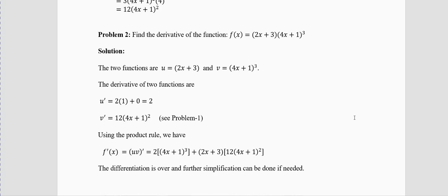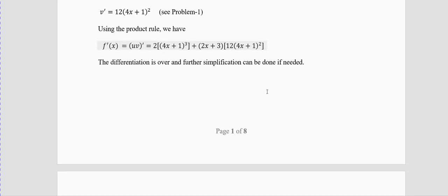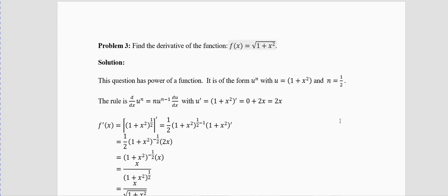Problem 2: Find the derivative of f(x) = (2x+3)(4x+1)³. Here you are multiplying two functions. The rule is: derivative of first function × second function + first function × derivative of second function. The derivative of (2x+3) is 2. The derivative of (4x+1)³ we saw in Problem 1, so just copy it. You get 2·(4x+1)³ + (2x+3)·[derivative of second function]. Your differentiation is just two lines — do not do any more algebra today.